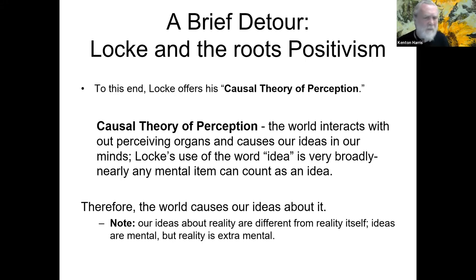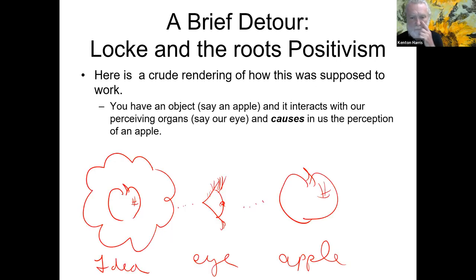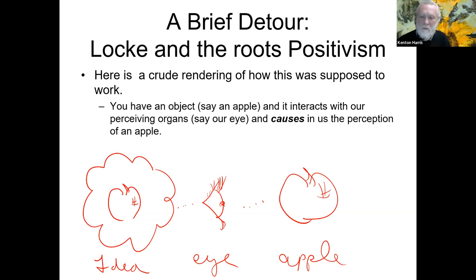Locke offered the causal theory of perception: the world interacts with our perceiving organs and causes ideas to occur in our mind. Locke uses the word 'idea' very broadly — nearly any mental event counts as an idea. So the world causes our ideas about it. There's the external world, the apple; there's the perceiving organ, the eye; and there's the mental image or mental representation, the idea of the apple.